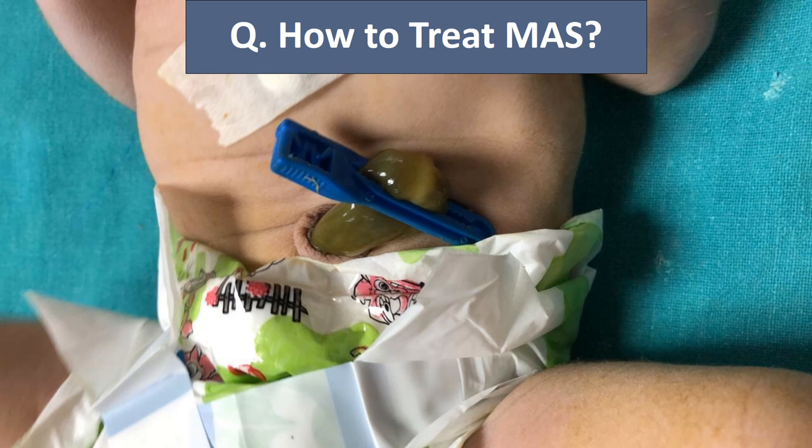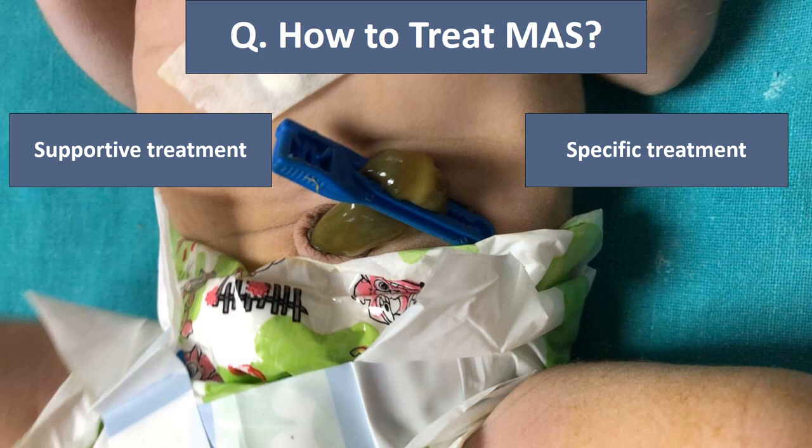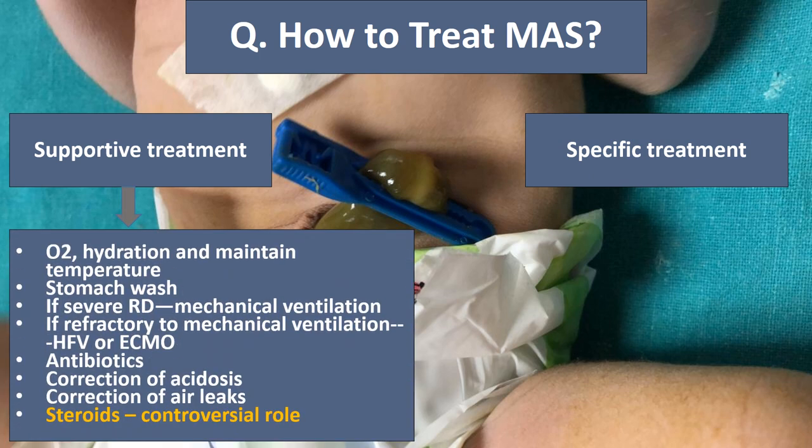How do we treat meconium aspiration syndrome? There is supportive and specific treatment. Supportive treatment includes giving oxygen, maintaining hydration with IV fluids, maintaining temperature under a radiant warmer, and giving a stomach wash with normal saline. If there are signs of severe respiratory distress, keep the baby on mechanical ventilation. If refractory to mechanical ventilation, high-frequency ventilation or ECMO can be given. The prophylactic role of antibiotics is controversial; start antibiotics if the newborn shows clinical signs of sepsis or if confirmed. Correction of acidosis should be done, as acidosis causes pulmonary vasoconstriction and can complicate with PPHN. Correction of air leak syndrome should be done. The role of steroids is controversial in meconium aspiration syndrome.